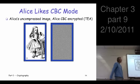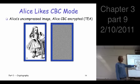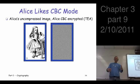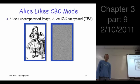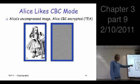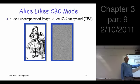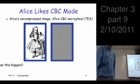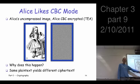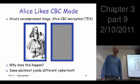Here's the picture you should remember for CBC mode. An uncompressed image of Alice encrypted in CBC mode — why doesn't it look like Alice, like it did in ECB mode? Because the same plain text does not give you the same ciphertext. It gives you something different because you're chaining these blocks together, using the previous ciphertext to cloud the picture before you encrypt. That's the crucial property of CBC mode: same plain text does not give you the same ciphertext.